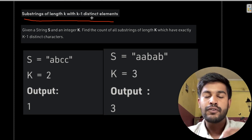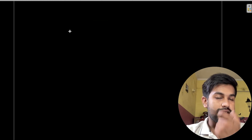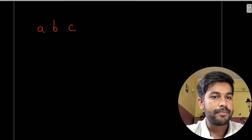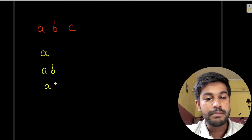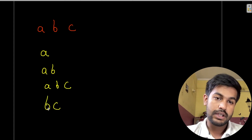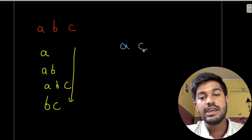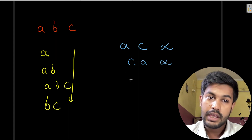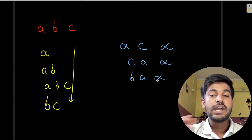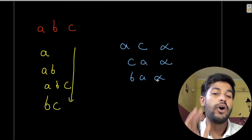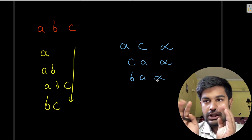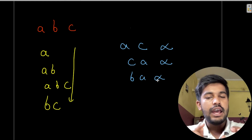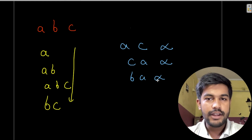The first part is that we need to count the number of substrings. A substring is nothing but a contiguous part of the given string. Suppose we have 'abc' — we can have 'a', 'ab', 'abc', 'bc' as substrings. But 'ac' is not a substring because it is not contiguous, and 'ca' or 'ba' are not substrings because they don't preserve the original order.